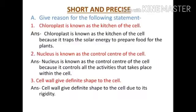First, short and precise questions. Number A: give reasons for the following statements. Question one: chloroplast is known as the kitchen of the cell. Answer: chloroplast is known as the kitchen of the cell because it traps solar energy to prepare food for the plant.